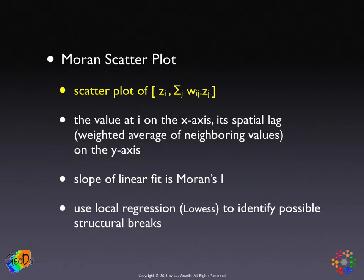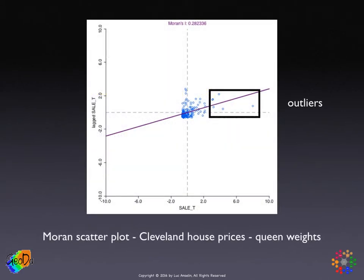Let's take a look at one of these scatterplots for our data on the Cleveland house prices. The first thing you see is that in the highlighted box, there are several extreme outliers — one is more than eight times the standard deviation away from the mean. On the lower end, that's much less the case, so the graph looks awkward with values on the negative side squished against the axis. To make it easier to interpret, we're going to eliminate these outliers.